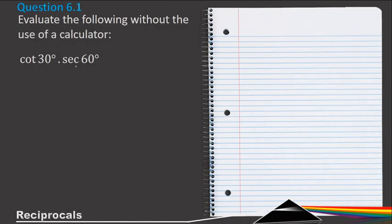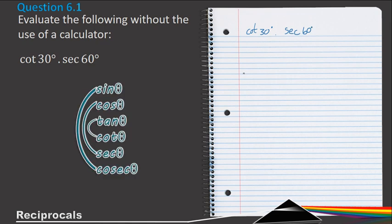Now for the following question, cot 30° times by sec 60°. So if I look at my ratios and their reciprocals,